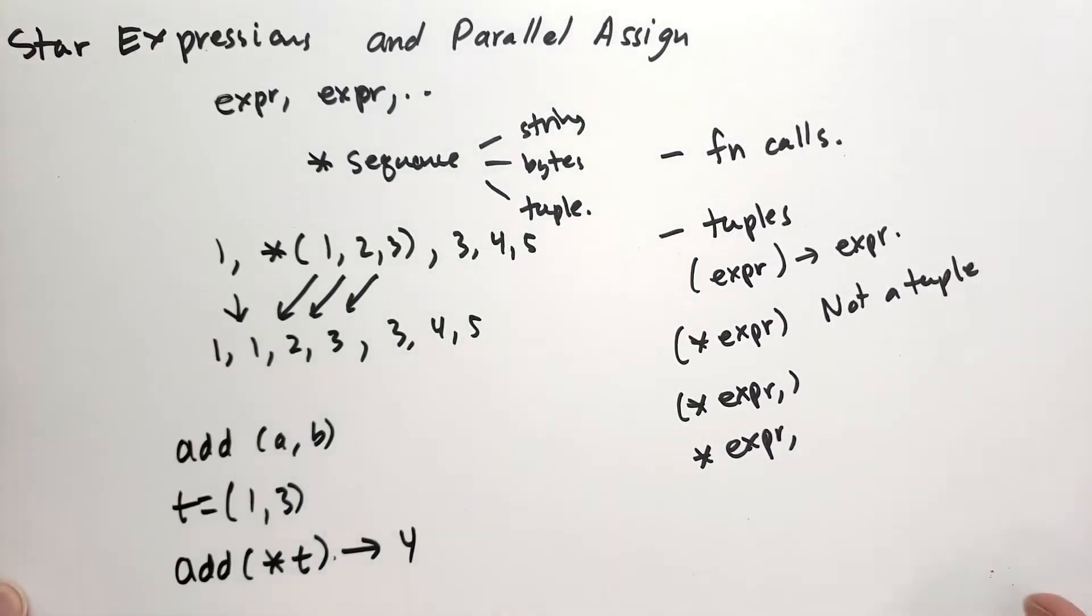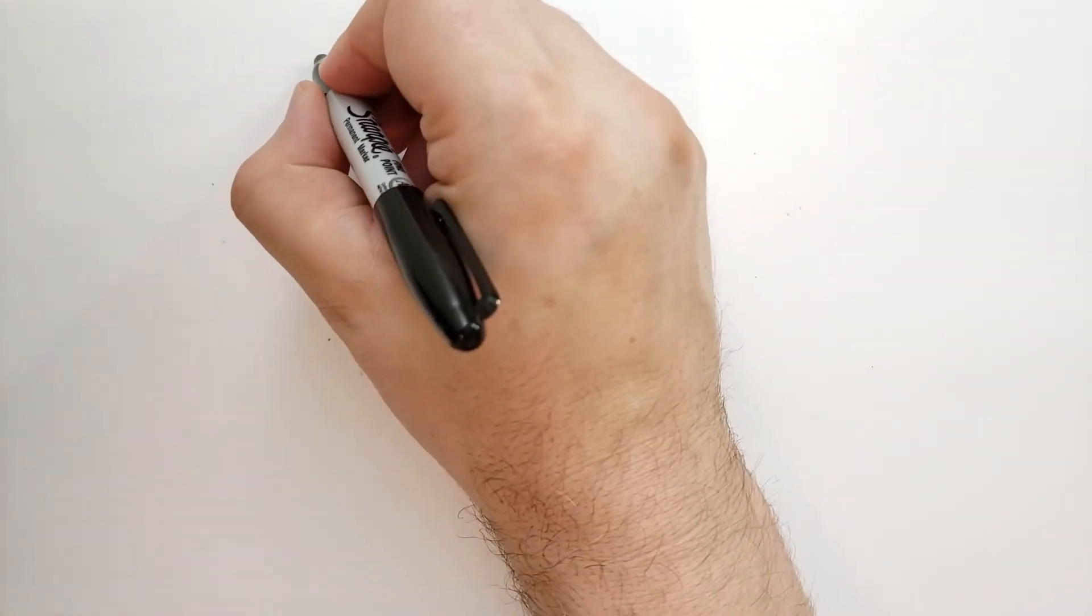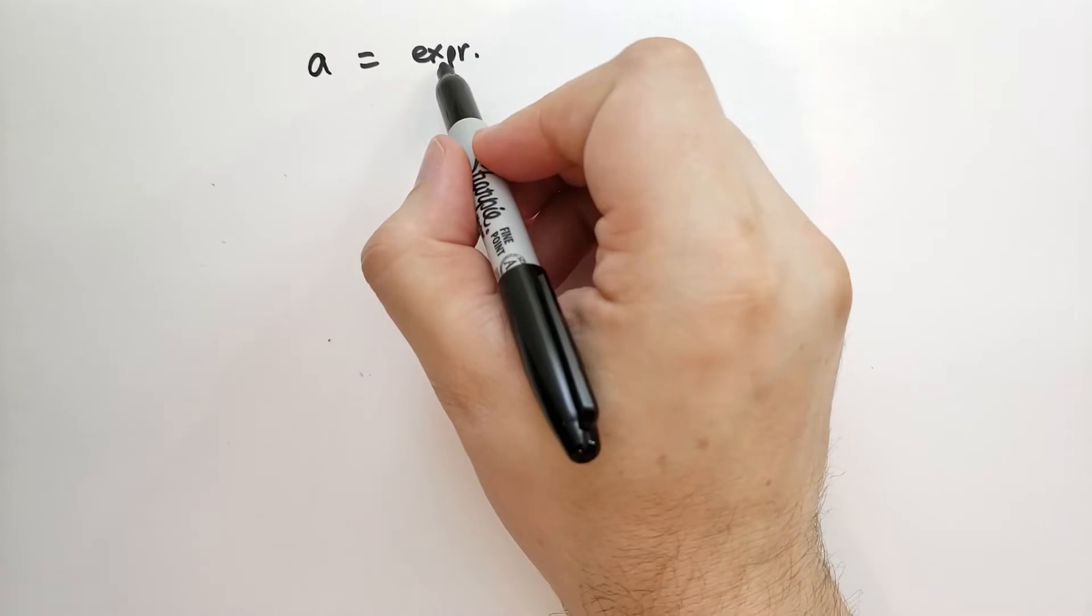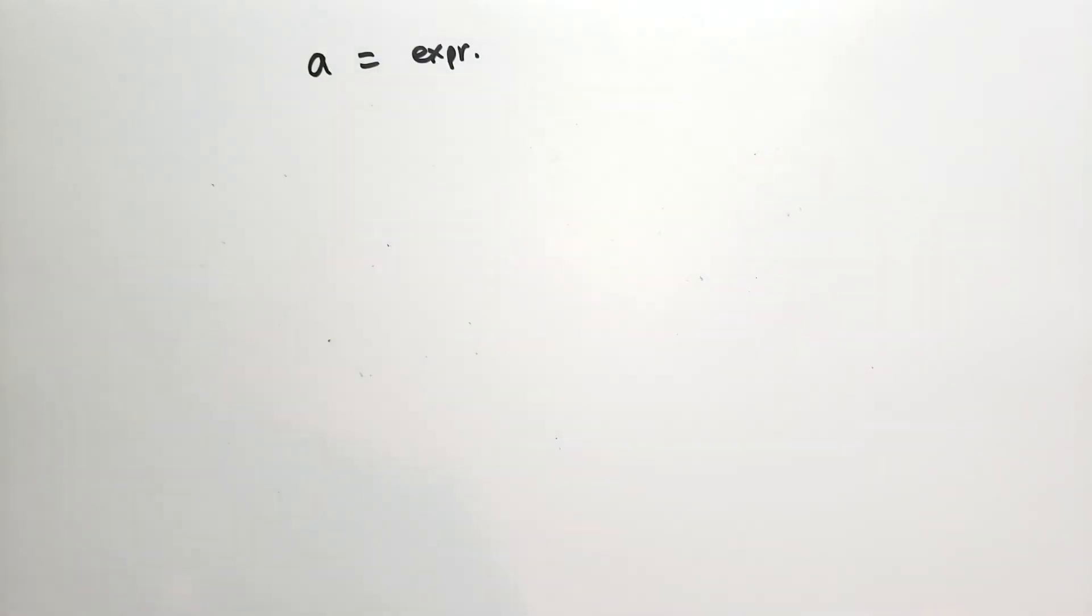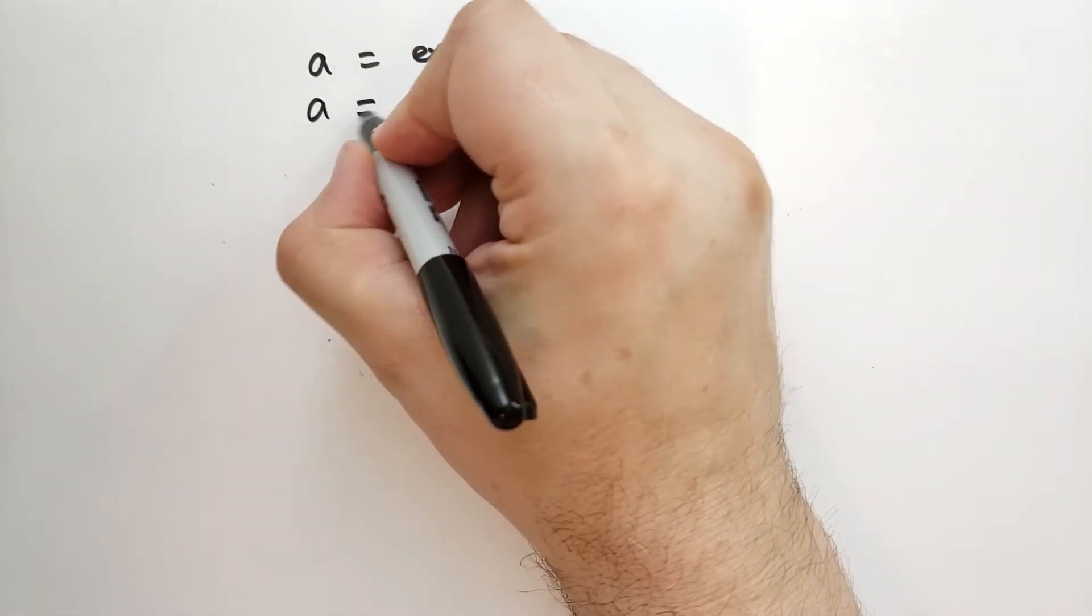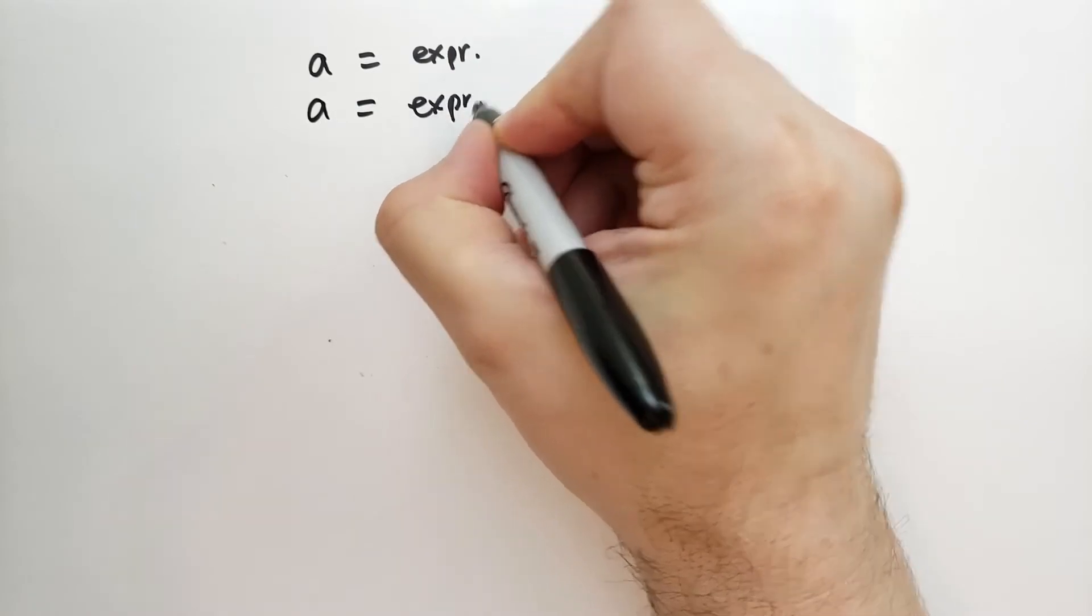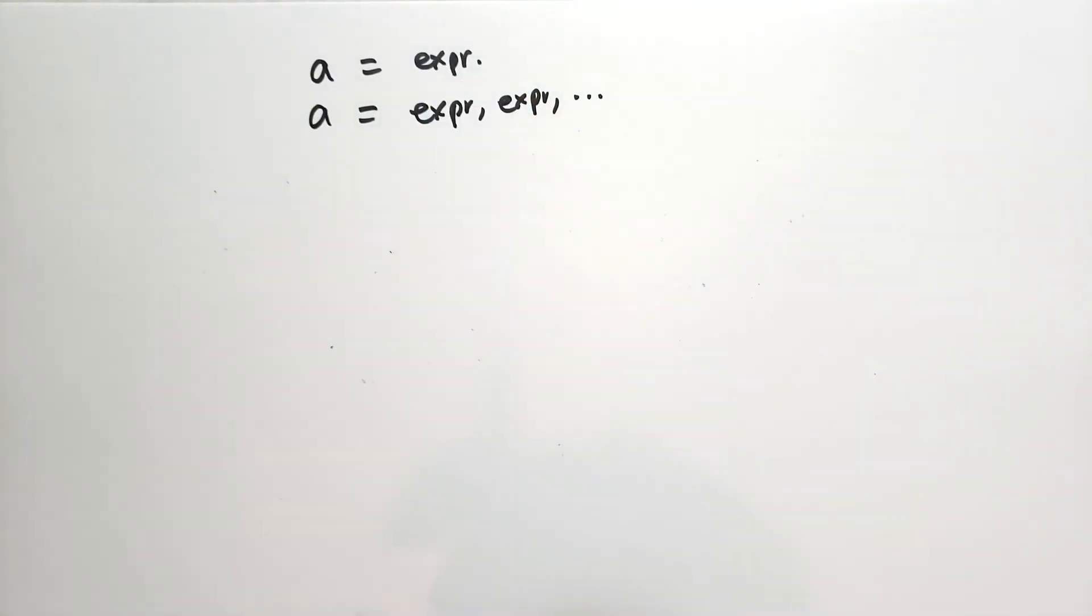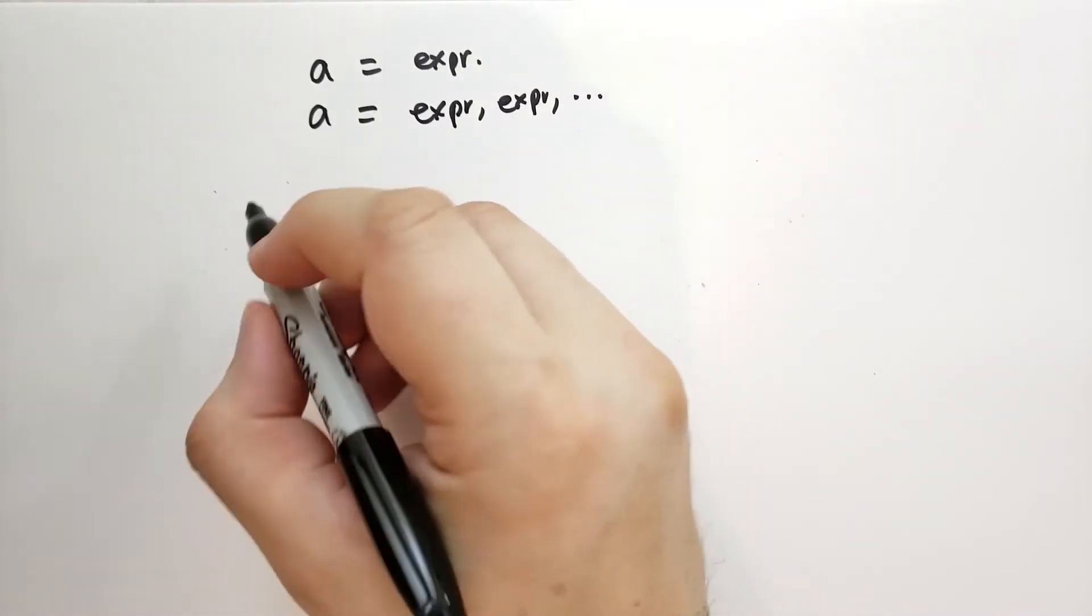It becomes super powerful when you understand what parallel assignment is. So we've already talked about you can have some identifier equals to some expression. Now if on the right side we have a tuple, so expr, expr, whatever, then a becomes pointing to that tuple. What I'm going to talk about now is parallel assignments.